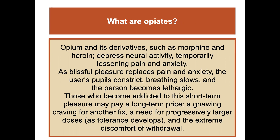Opiates like opium and its derivatives — morphine and heroin — depress neural activity, temporarily lessening pain and anxiety. As blissful pleasure replaces pain and anxiety, the user's pupils constrict, breathing slows, and the person becomes lethargic. Those who become addicted to this short-term pleasure may pay a long-term price: a gnawing craving for another fix, a need for progressively larger doses as tolerance develops, and extreme discomfort of withdrawal.